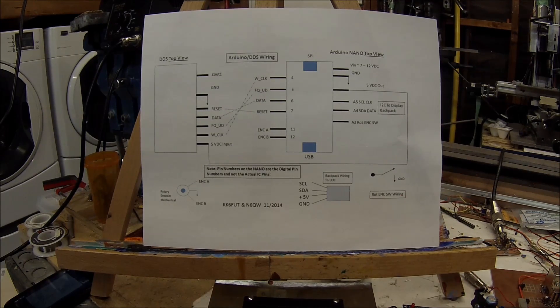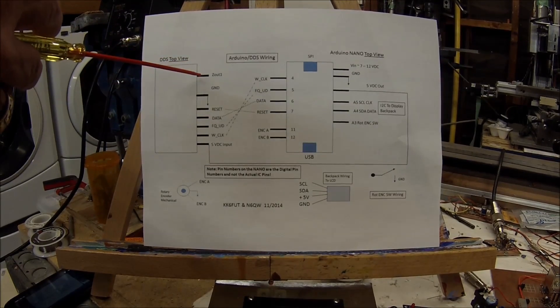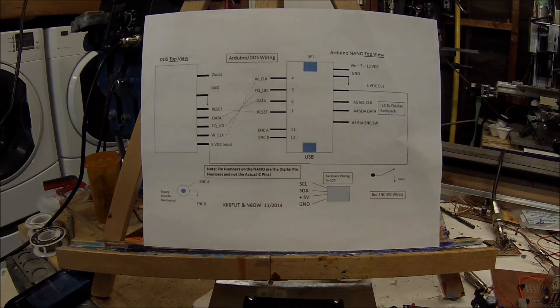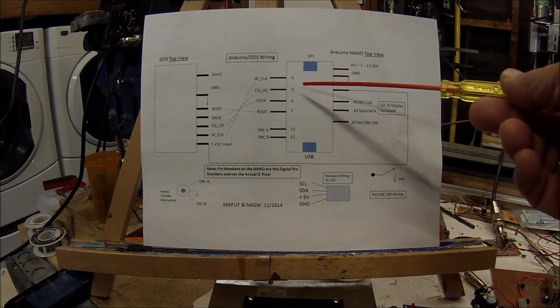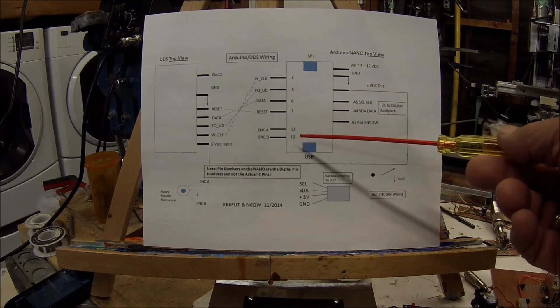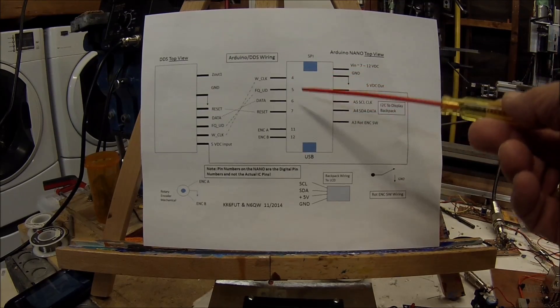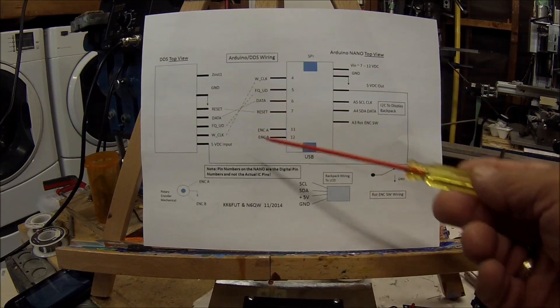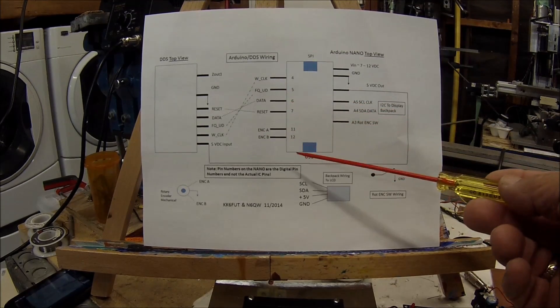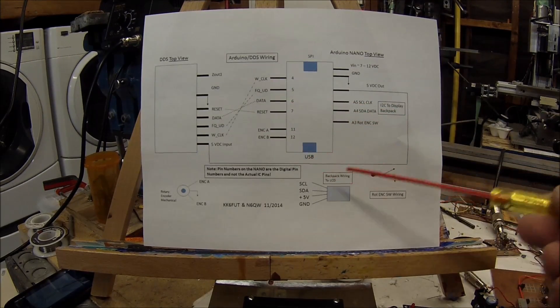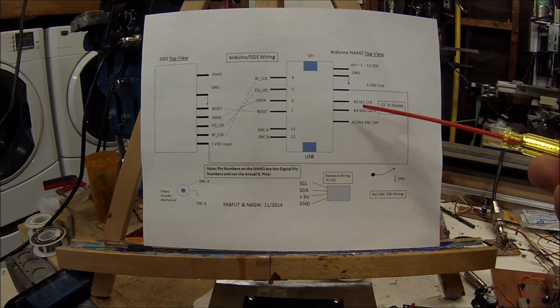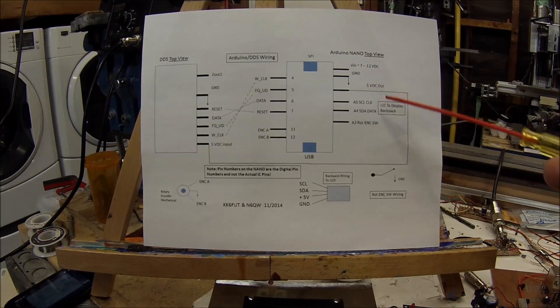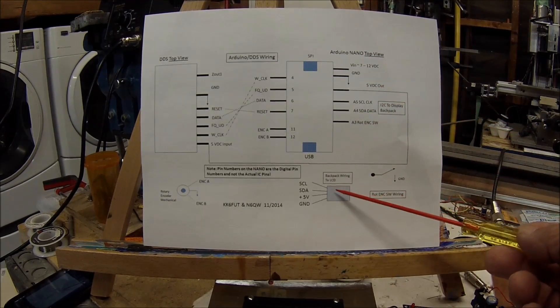There are six connections that go to the Arduino. These include the reset, data, a term called FQUD and W clock, and of course five volts and ground. And one comes out of the DDS and that's the Z out, that's the output, that's the RF coming out of there. Essentially we hook this up to digital pins 4, 5, 6, 7, 11, 12. Pins 4, 5, 6, 7 are the ones that get connected to the 9850. Pins 11 and 12 in addition to ground are connected to the encoder pins.